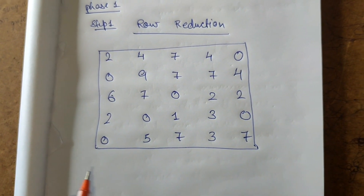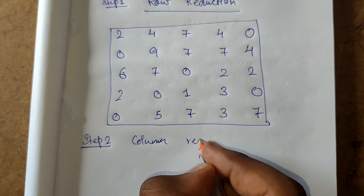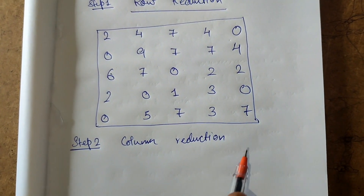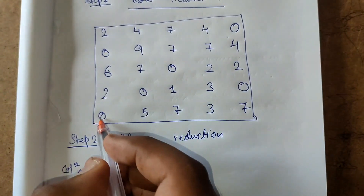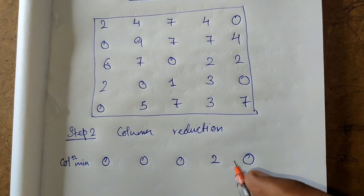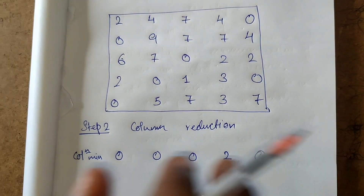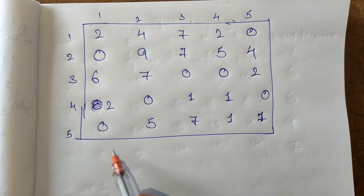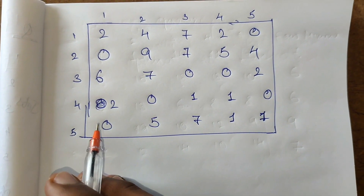Step two of phase one is column reduction. We iterate through all columns and find the column minimum. The column minima are: zero, zero, zero, two, and zero. We then subtract each column minimum from all elements in that column. Since only one column has a non-zero minimum of two, we subtract two from that column and draw a new table. Phase one is now complete.